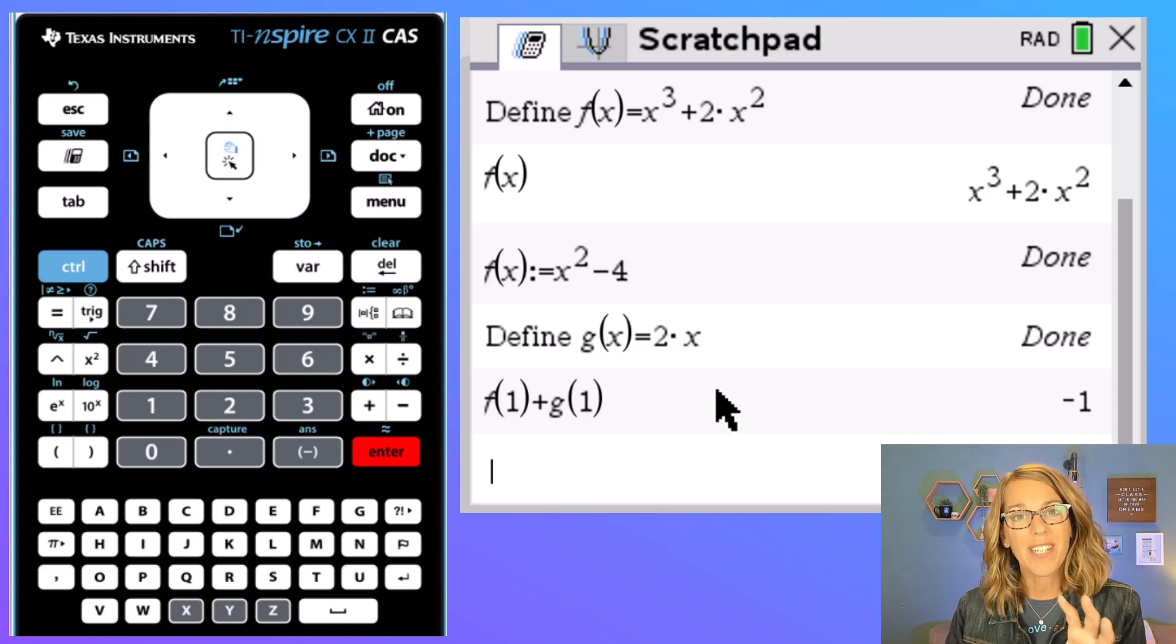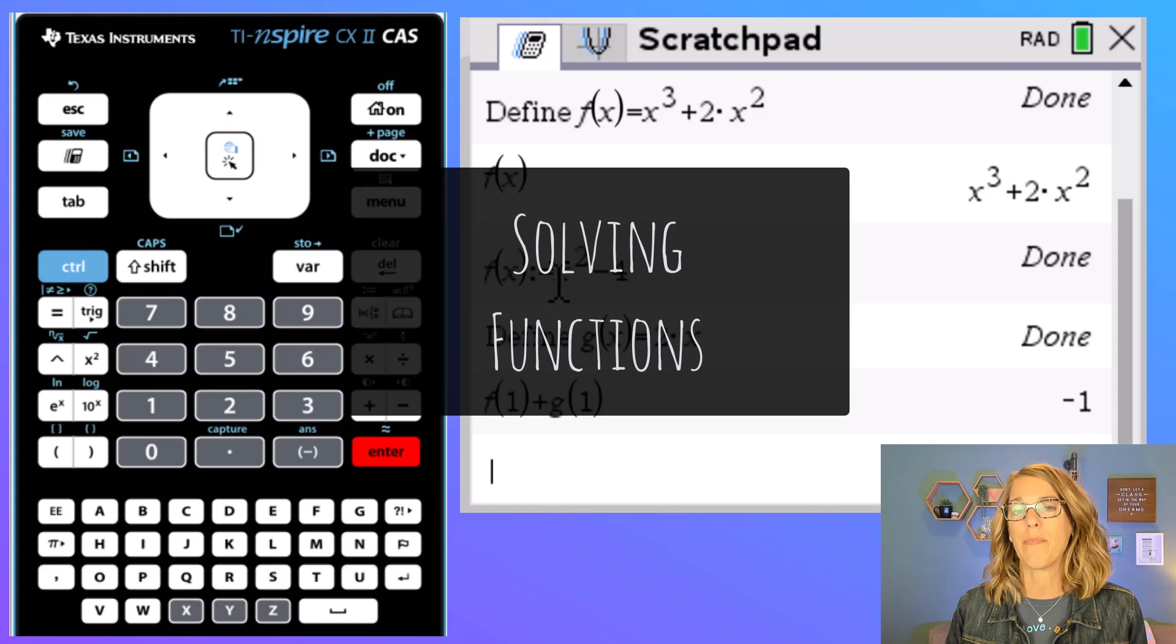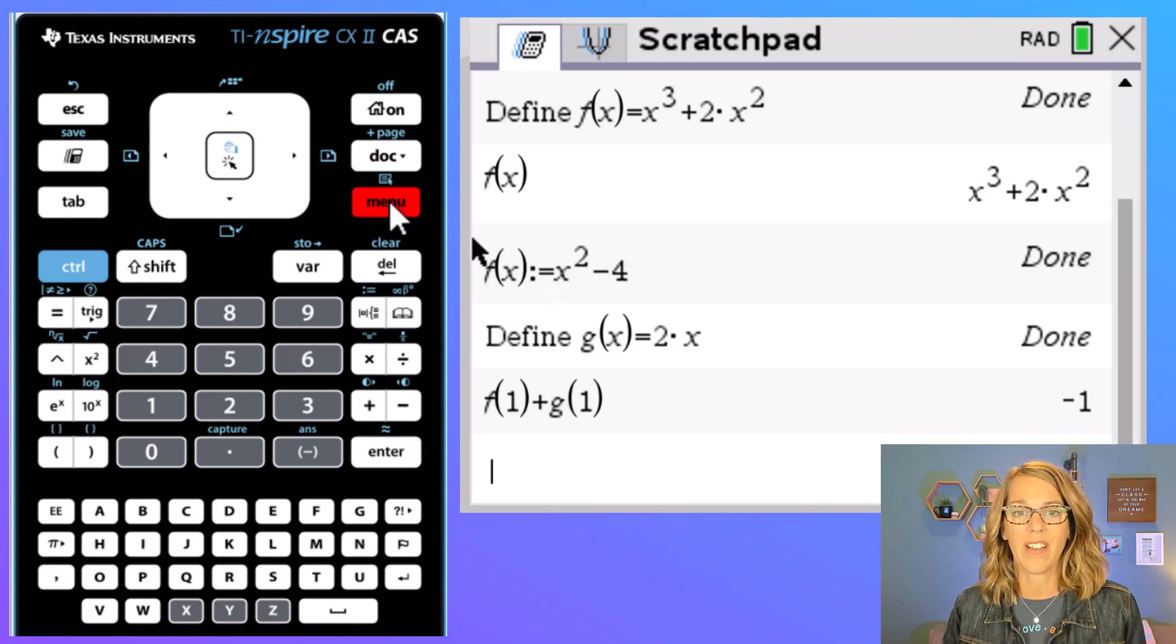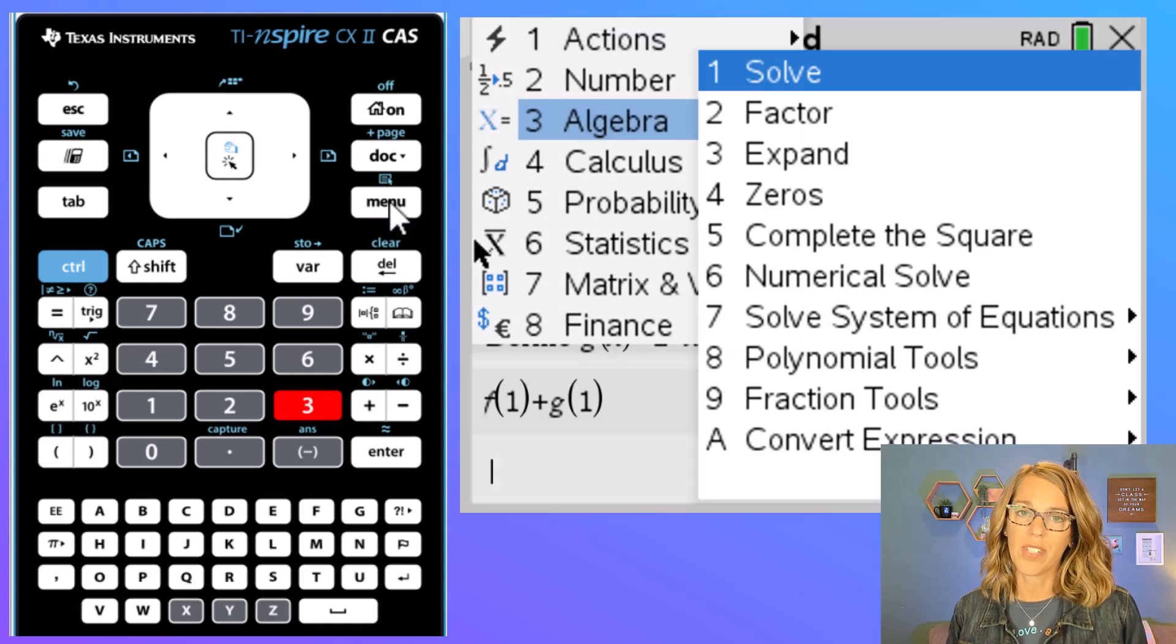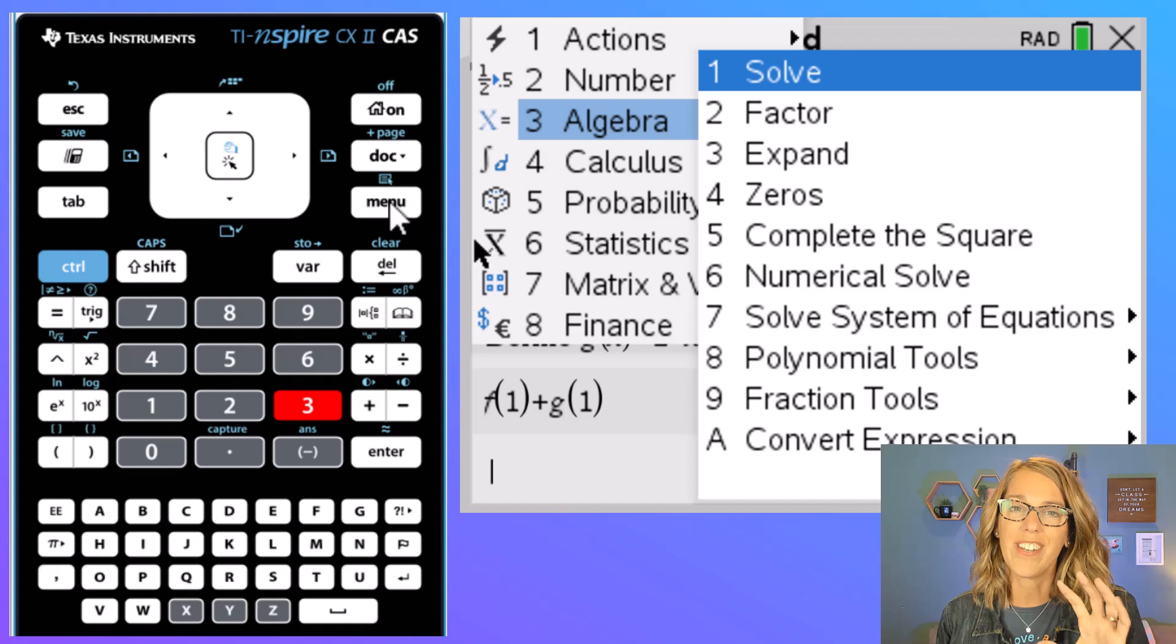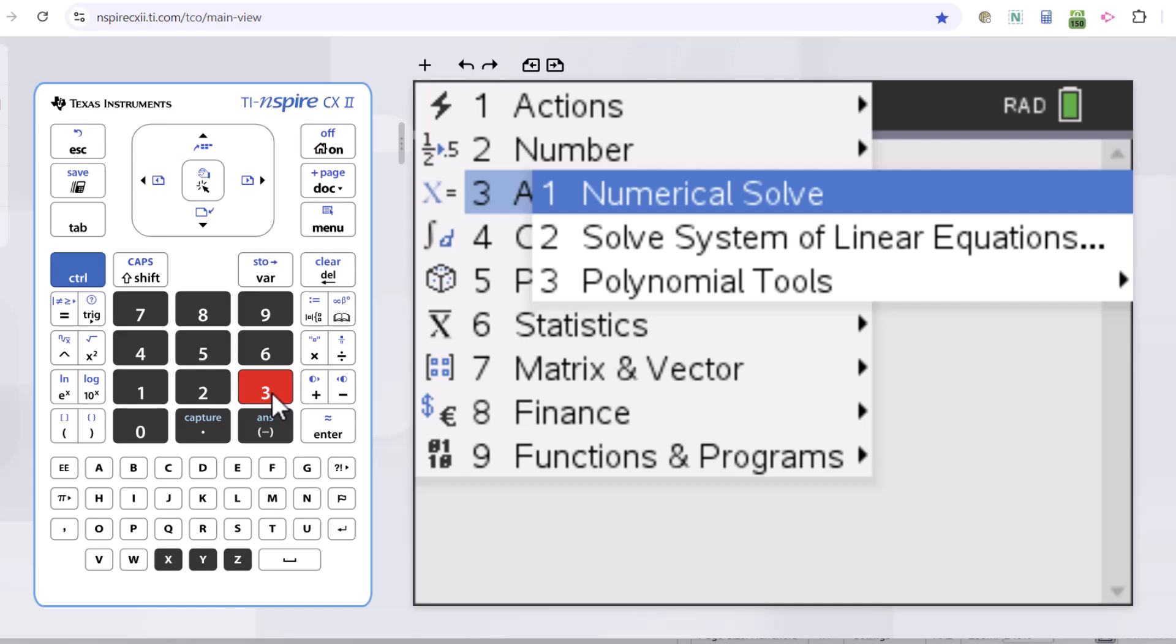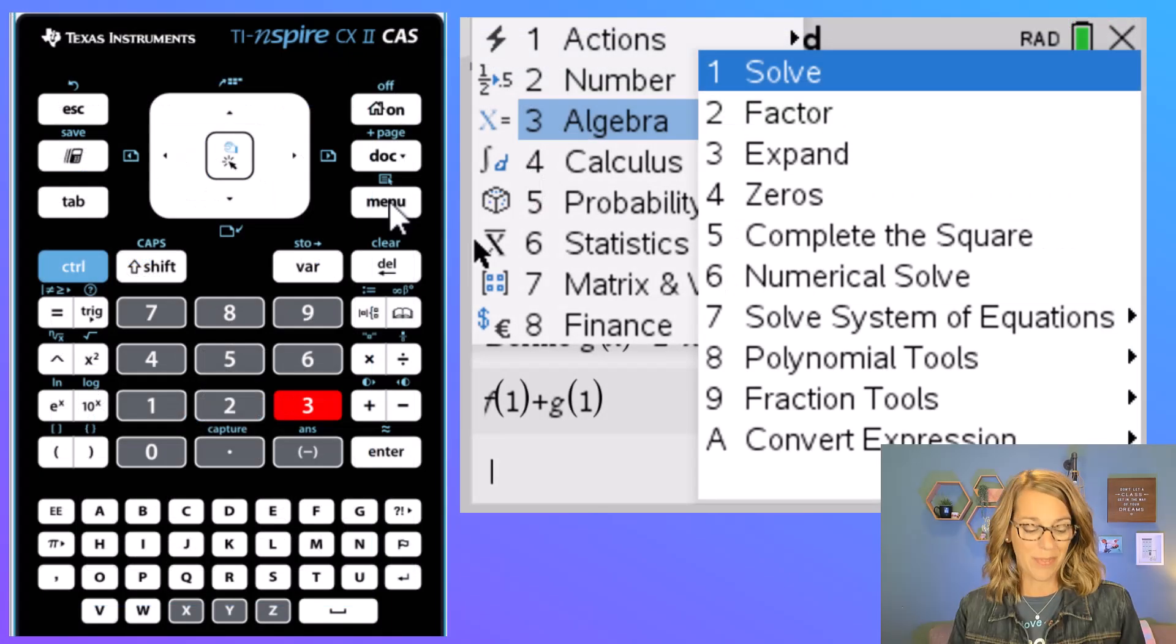Now if you happen to be using the CAS version of this calculator, it will do even more. So we can take this x squared minus 4 and we can solve it. I'm going to go back into my menu to get all of my options for the calculator view and I'm going to go down to algebra or you can type number 3 and I'm going to choose solve. If you are on the non-CAS version, that CX version, then you'll have an N solve, which means numerical solve. It cannot do the algebra for you. This one can though.